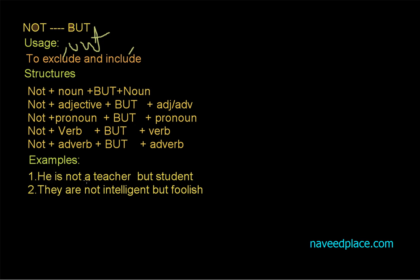The first example is: he is not a teacher but a student. For example, we are talking about, according to the usage, exclude to out something. We are saying that no, he is not a teacher. For example, he has a very good physique and he talks like a teacher. So someone is thinking he is a teacher.